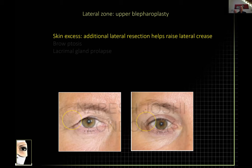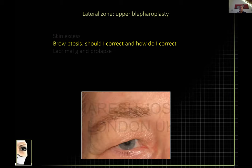And here's a patient with huge amounts of skin that have completely obliterated the lateral canthal angle. With this extension plus deep sutures and orbicularis debulking, you can reveal the lateral canthal angle and also a larger pretarsal platform.